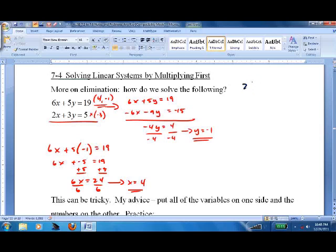2 times 4, plus 3 times negative 1, should equal 5.